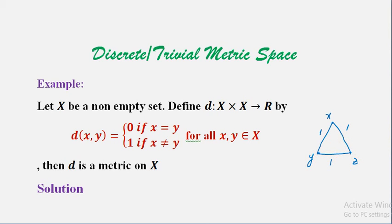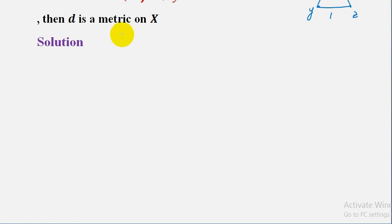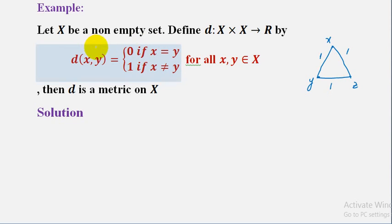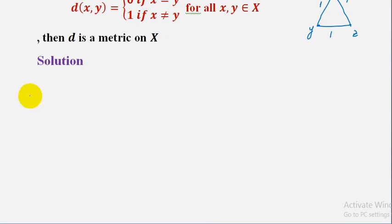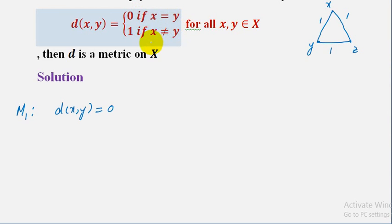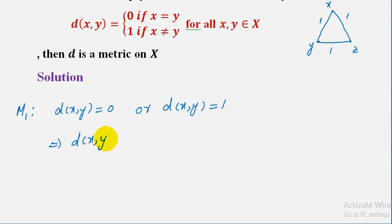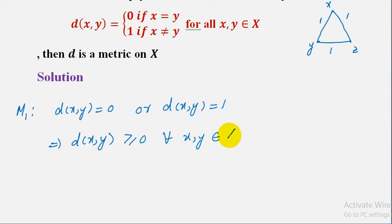This metric is called the discrete metric. Now we prove that this is a metric, that is, this relation satisfies all the conditions of a metric space. The first condition, M1, is that d(x,y) is greater than or equal to 0. As d(x,y) is either 0 or 1, by combining these two possibilities we can write that d(x,y) is greater than or equal to 0 for all x, y belonging to x. So the first condition of metric space is satisfied.